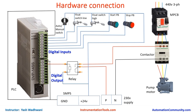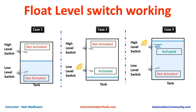Before moving ahead, we need to understand the working of the float switch. In normal condition, when the water is at a normal level — above the low level and below the high level — as we consume water, the level will reduce. When the water level becomes lower than the float switch level, the switch will be activated and give a signal to the PLC, which will then start the pump.